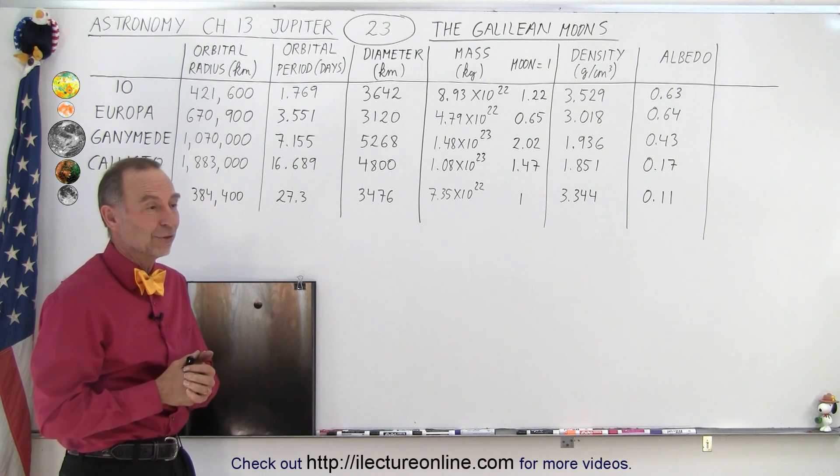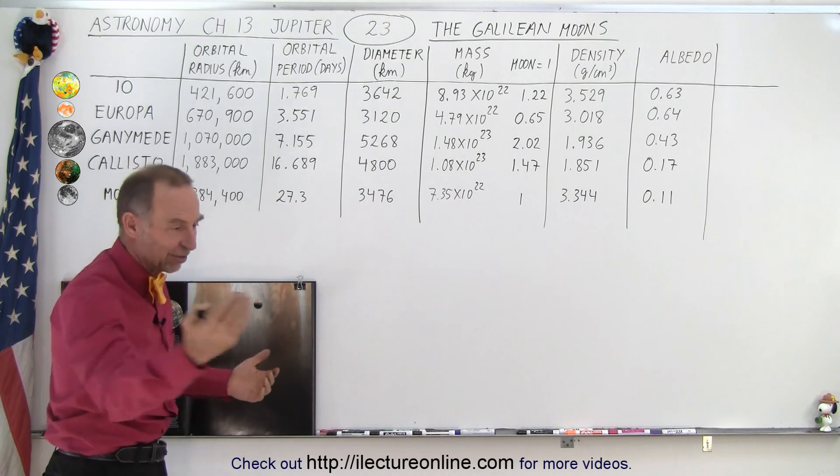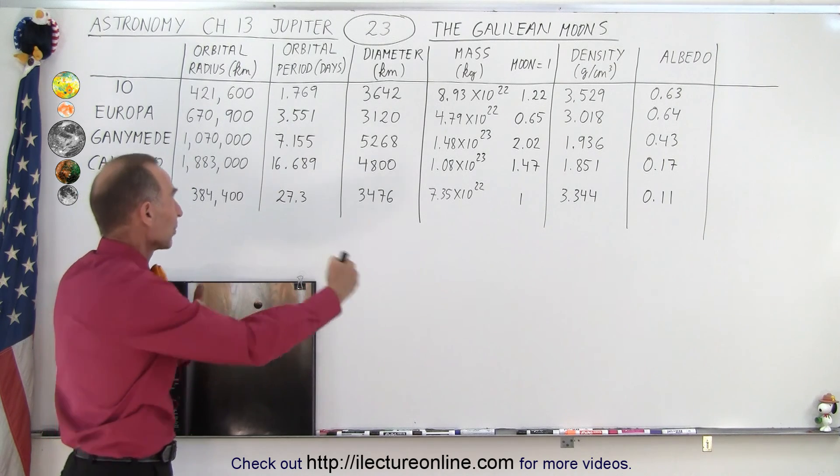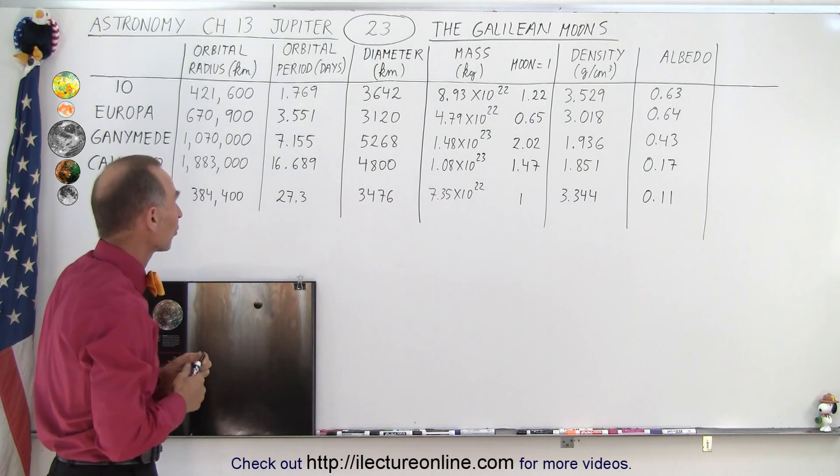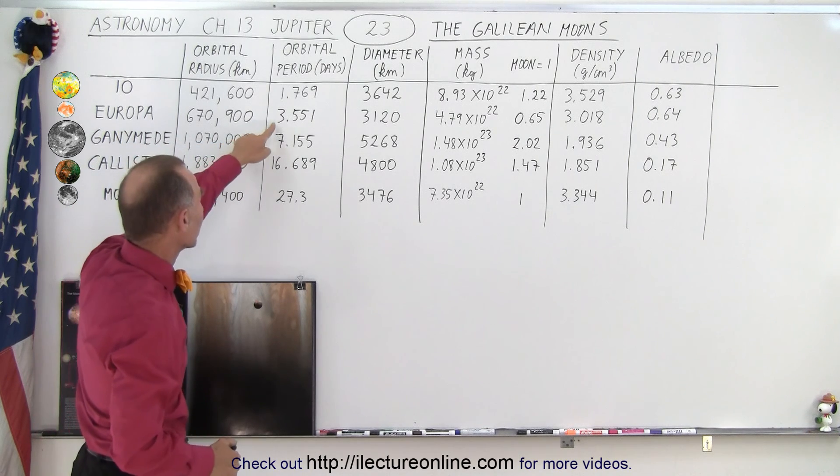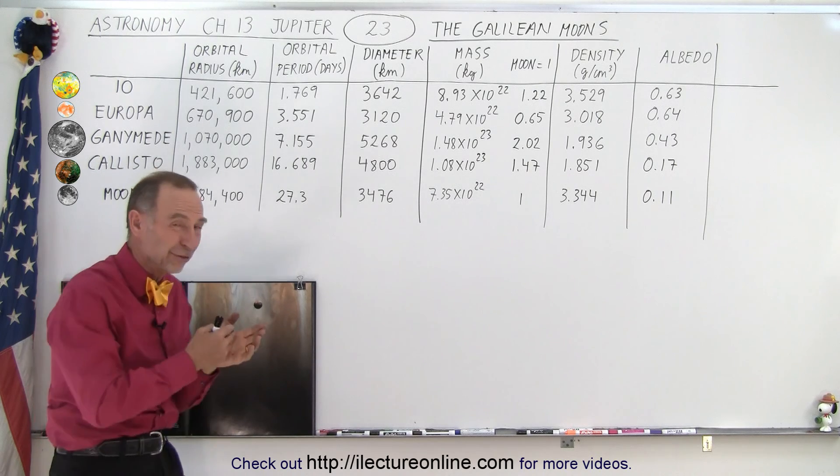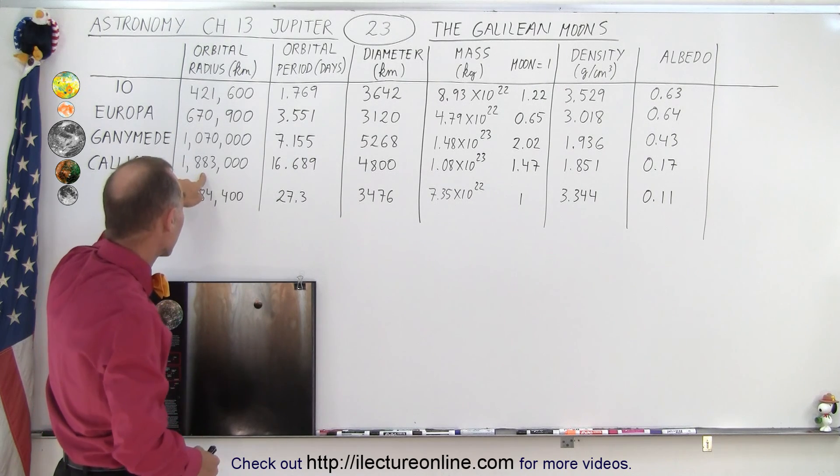Of course, if it was traveling any slower than that, it would simply spiral inward and collide with Jupiter. So it needs that speed in order to stay away from the gravitational clutches of Jupiter. Europa takes about three and a half days. Ganymede takes a little bit over seven days. And only Callisto, which is far enough away, almost two million kilometers, can take its time and take almost 17 days to go around Jupiter once.